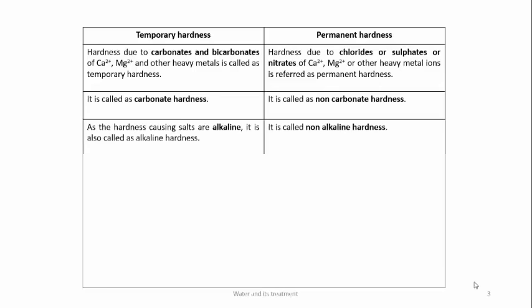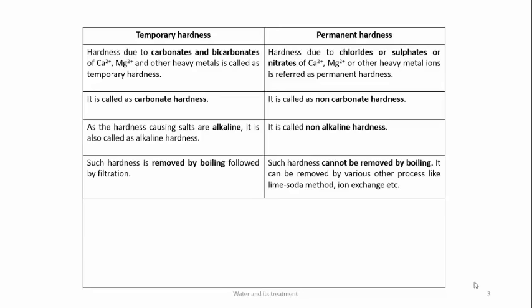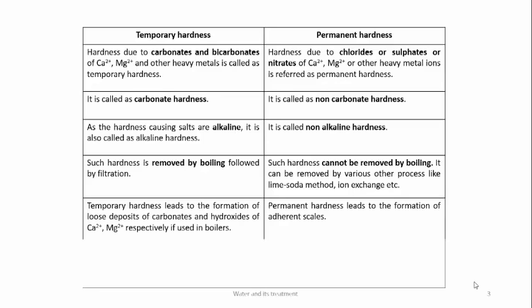Carbonates are basic in nature; therefore, temporary hardness is also called alkaline hardness, whereas permanent hardness is called non-alkaline hardness. Temporary hardness can be removed by boiling, whereas permanent hardness cannot be removed by boiling. Temporary hardness leads to the formation of loose deposits of carbonates and hydroxides of calcium and magnesium, whereas permanent hardness leads to the formation of adherent scales.